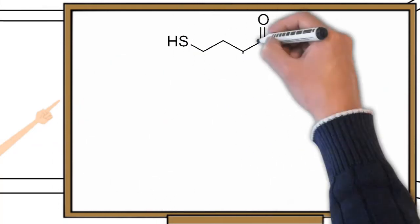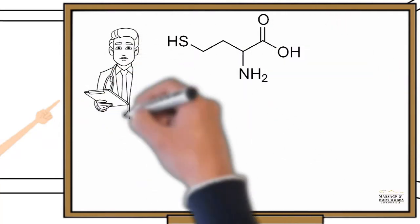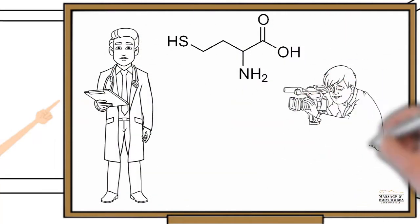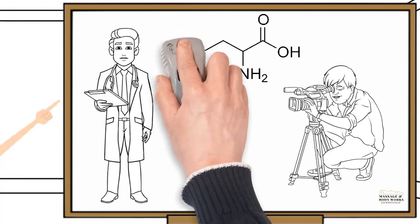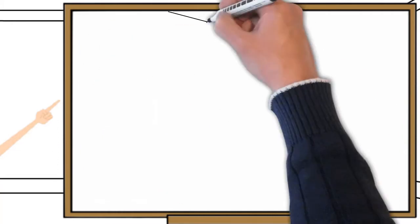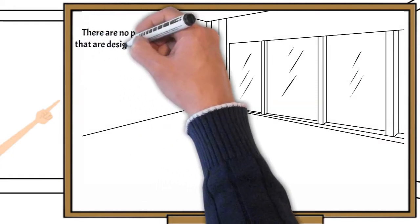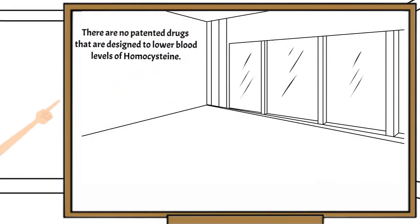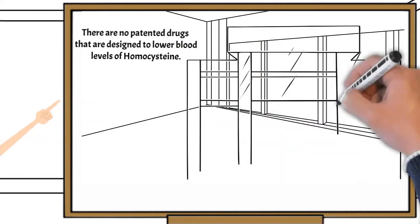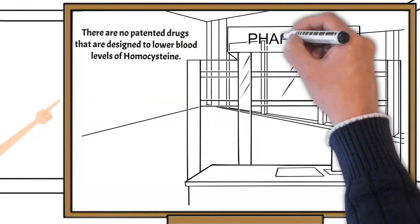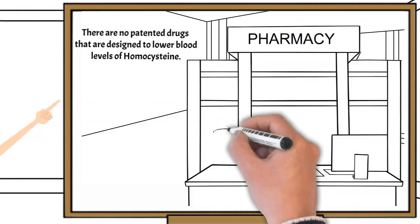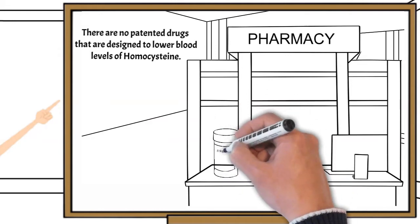If homocysteine is such a powerful marker for disease, then why is it that we hear so little about it from doctors and in the media? The answer is simple. Currently, there are no patented drugs that are designed to lower blood levels of homocysteine. With no patented drugs for lowering homocysteine, pharmaceutical companies have no incentive to spend their marketing dollars on educating doctors and increasing public awareness about homocysteine.